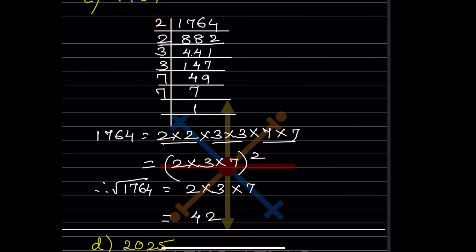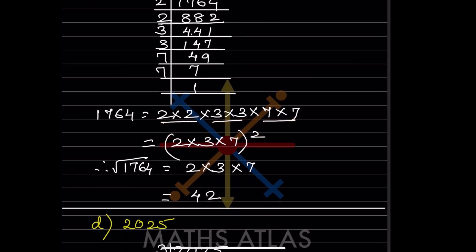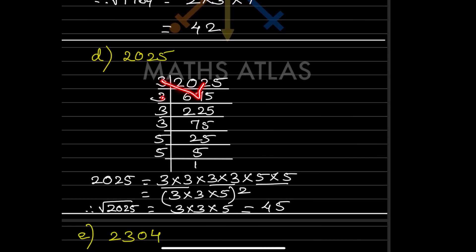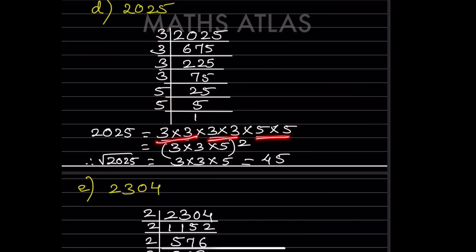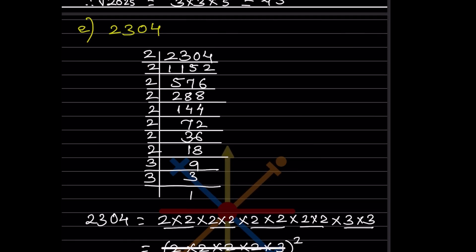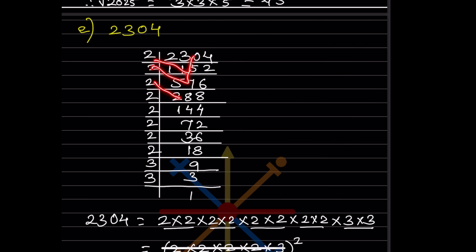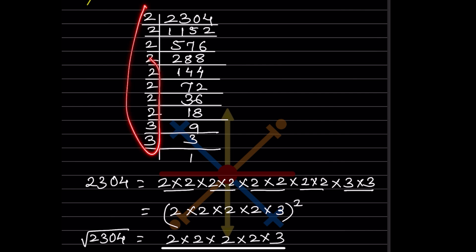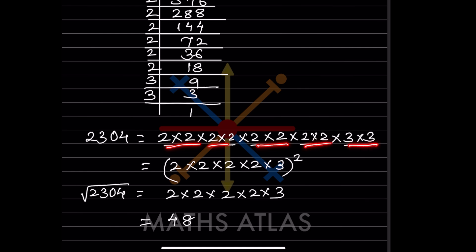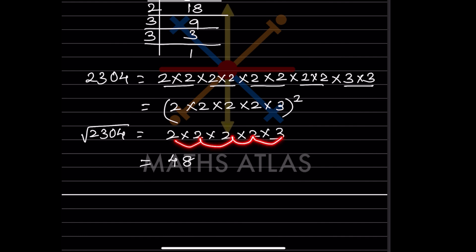These are the factors written over here, and we are going to pair them. Write each factor only once and put a square root sign. Because the square and root cancel, the answer is 42. For the next number, these are the factors; just make groups of two, check the pairing, and when you multiply, you get 48.